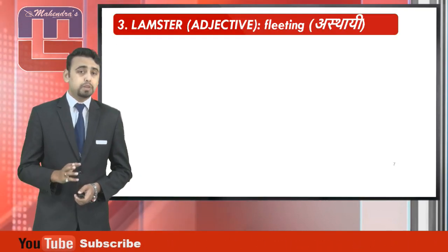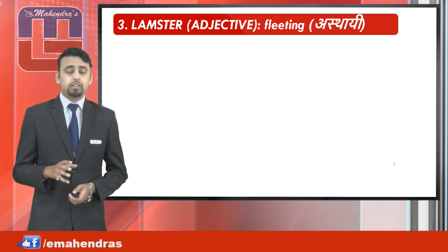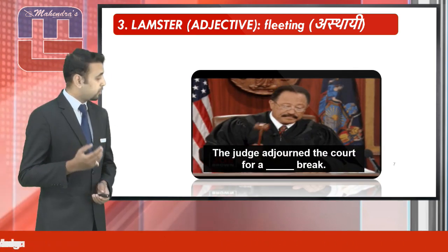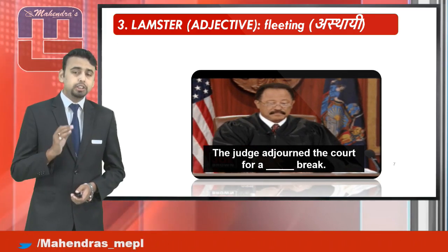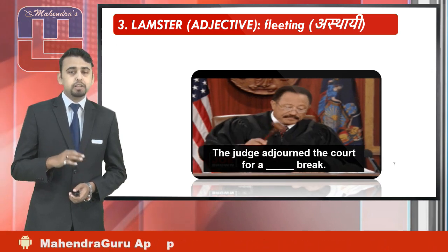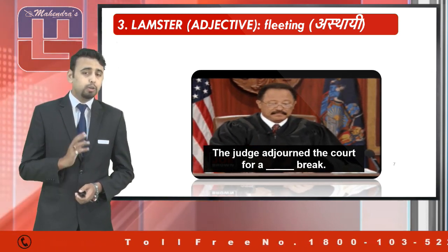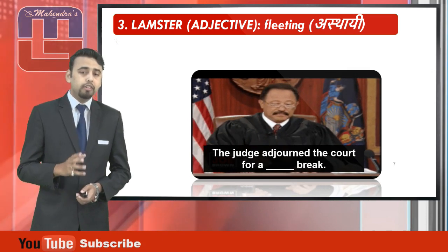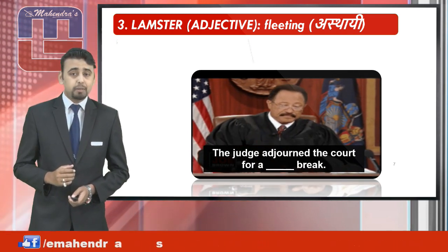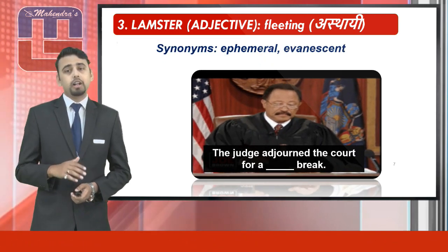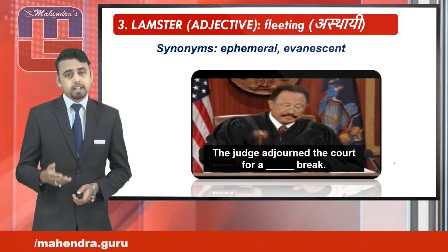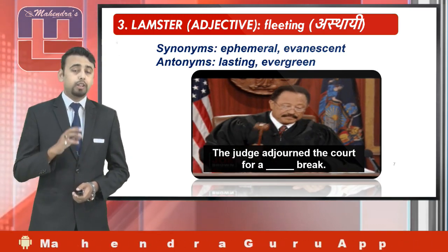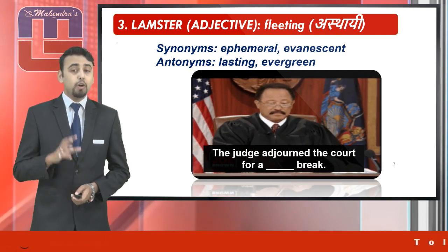Here's the next word: it's 'lamster.' Lamster, being an adjective, means fleeting or temporary. Let's have a look at the usage. The judge adjourned the court for a blank space break — what we want to convey is the judge adjourned the court for a temporary break. So the usage is: 'The judge adjourned the court for a lamster break.' The synonyms of lamster are ephemeral or evanescent, and the antonyms are lasting or evergreen.